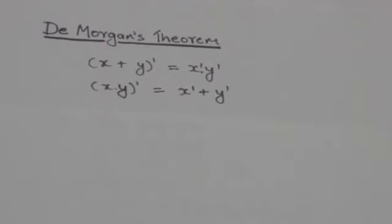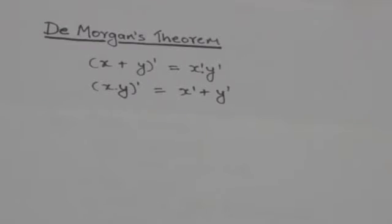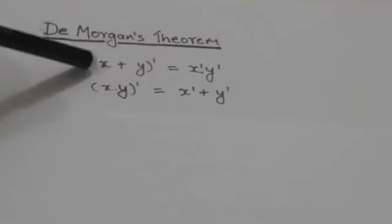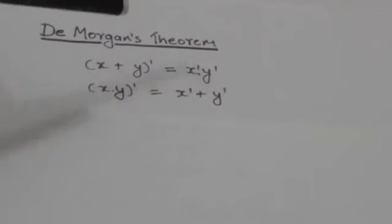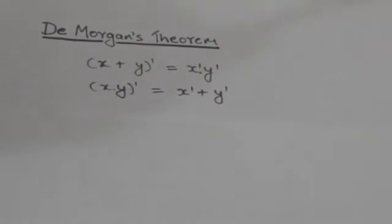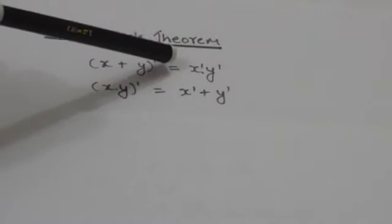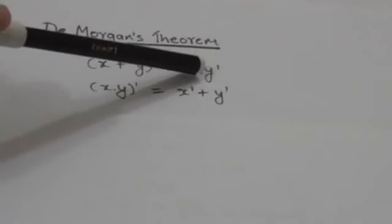Hello friends, welcome back. In this tutorial we will study De Morgan's theorem. De Morgan's theorem states that if X and Y are two binary variables, then the complement of X or Y will be equal to X complement and Y complement.